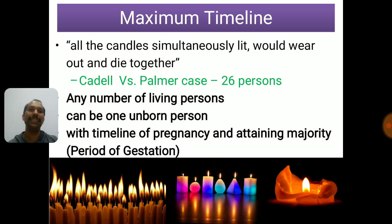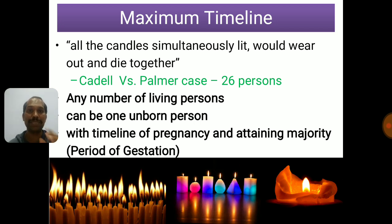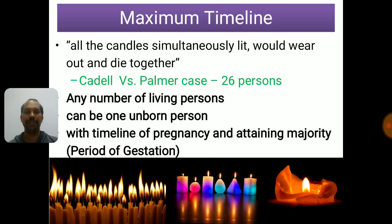Regarding majority, there is no definition in this section, but under Indian law 18 years is the majority age — the age at which one can sign a contract. The maximum timeline will be within the period of pregnancy and attaining the age of majority, which means 18 years plus the period of gestation. Period of gestation means from conception to delivery — when the child is in the womb — which is nine months or 280 days. So the maximum timeline is 18 years and 280 days. This section also gives an exception to Section 20, allowing vesting to be extended until the age of 18.